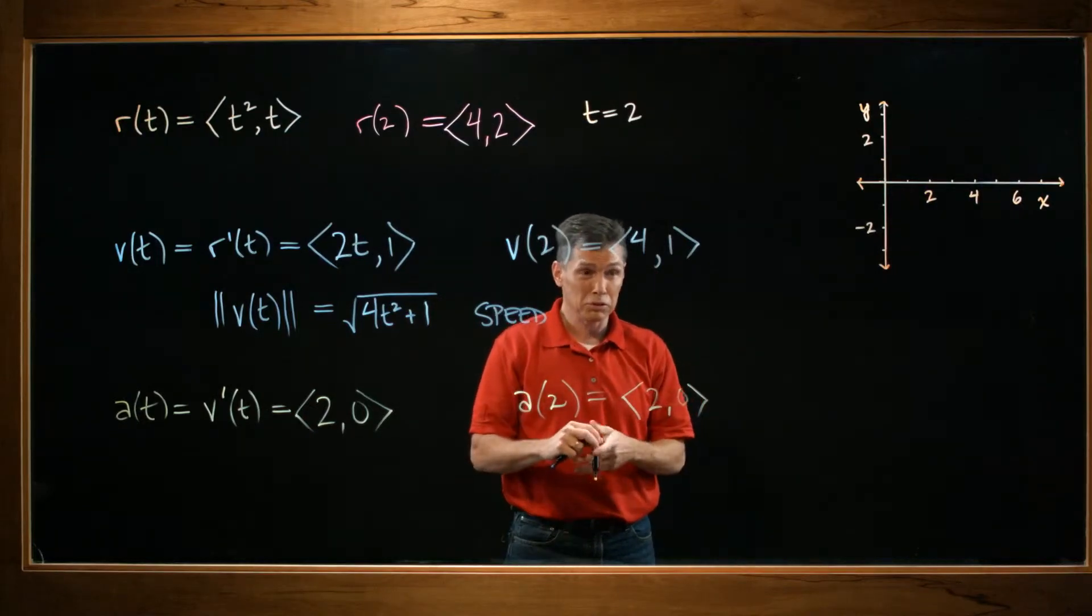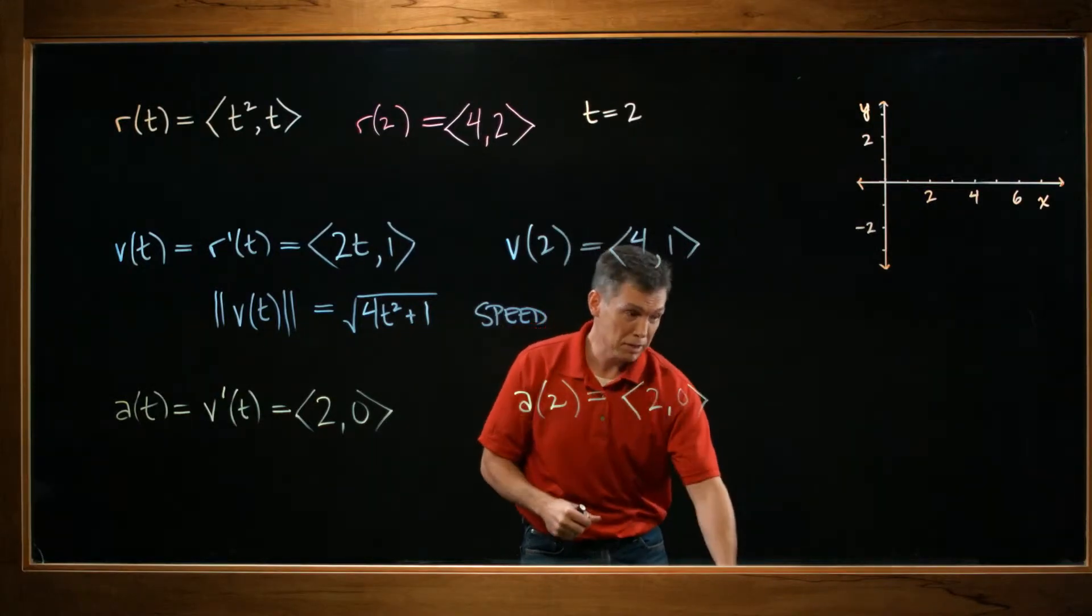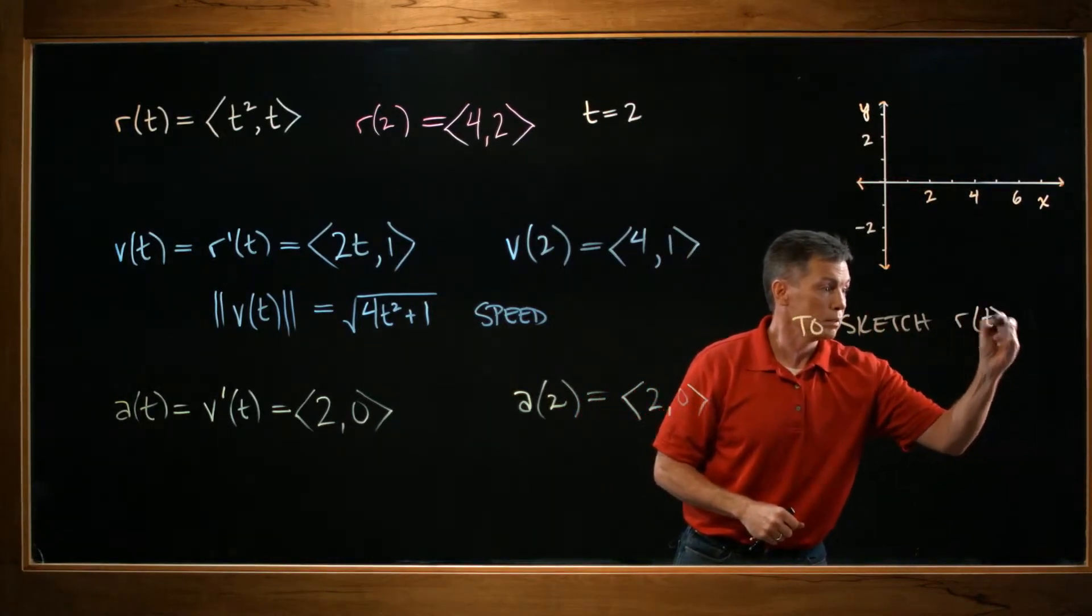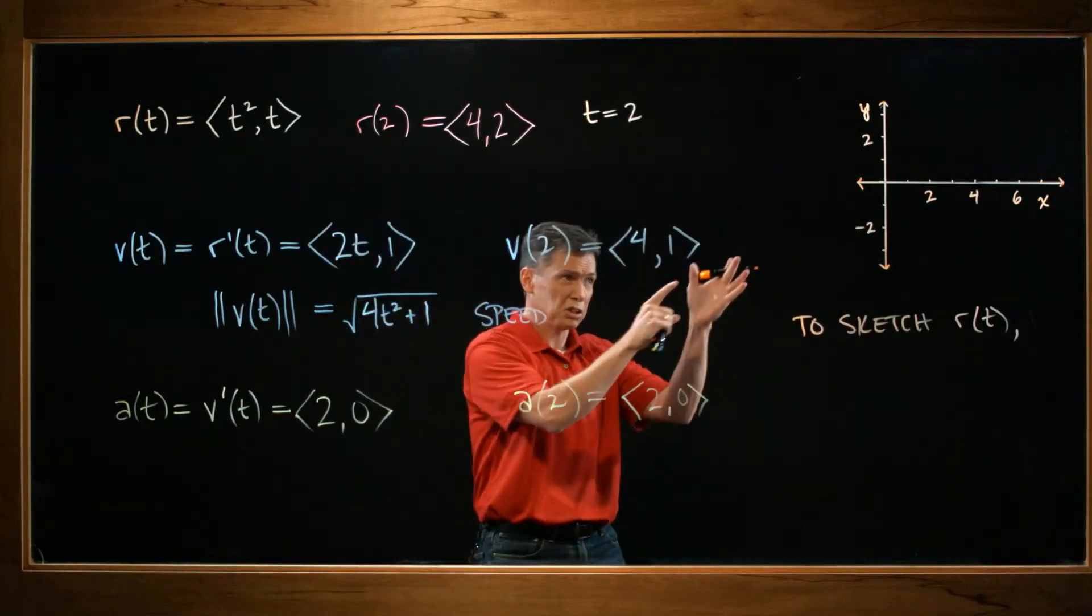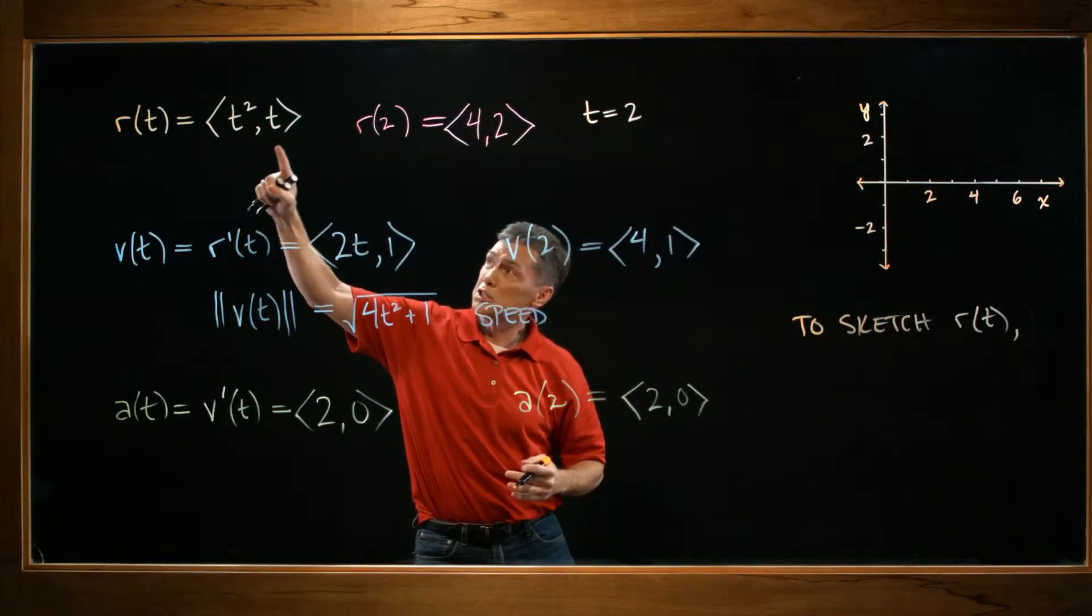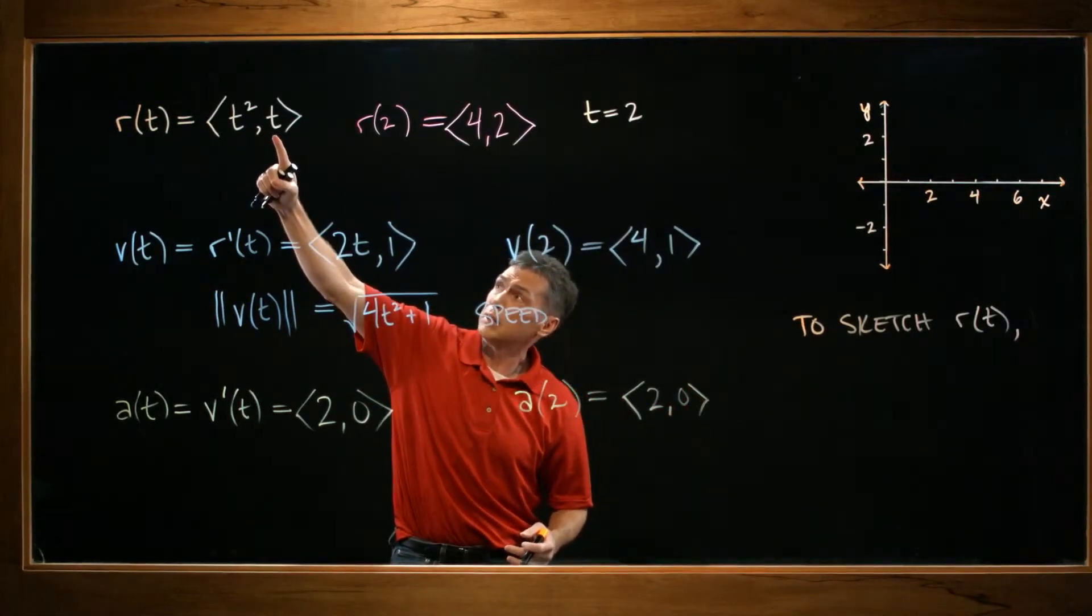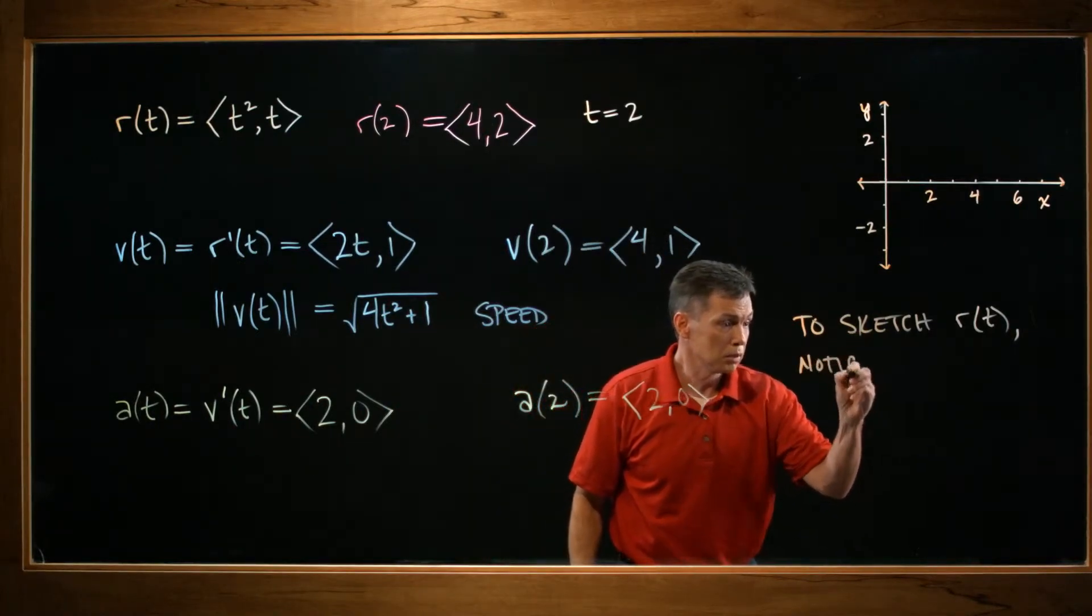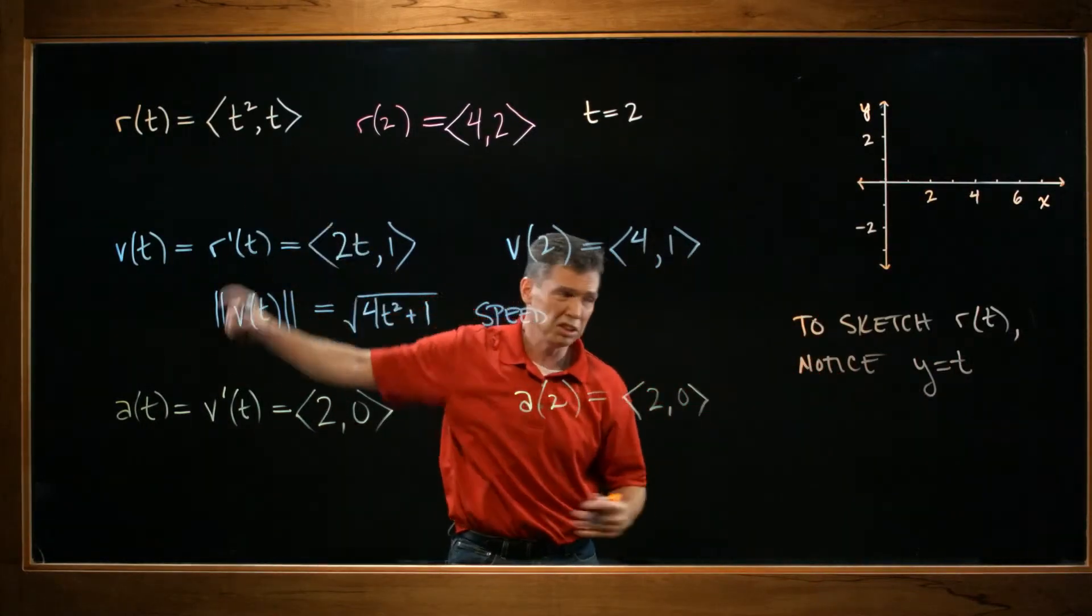And then finally, and this is really the best part, is try to see how all those things are connected by graphing. So let's start with a graph of actually even the original function that they give us, that r of t. And you've done problems like this before, where they've given you a vector-valued function. You have to see what it looks like in a good old-fashioned xy plane. So in this case, what I do is, well, which I always do, is look for relationships between your components and express them in terms of x and y. This one's easy, because that second component is just a single lone little t. So to sketch r of t, what I'll notice is that y equals t. All right. The second component is just t. So y equals t.